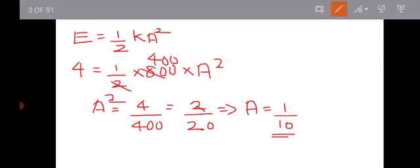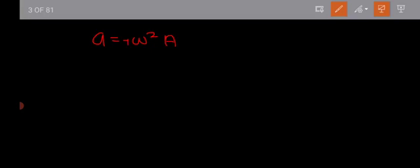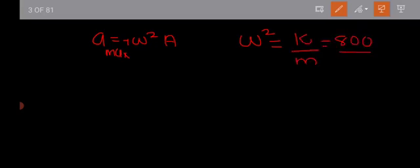Now let's look at the maximum acceleration. A_max equals omega squared times A, ignoring the sign. Omega squared equals K by M. K is equal to 800 and M is equal to 400. So 800 divided by 400 is equal to 200. Then 200 into A, where A equals 1 divided by 10.